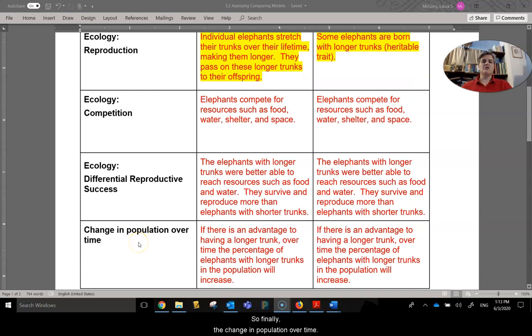So finally, the change in population over time. When there's an advantage of having a longer trunk, the percentage of the elephants who have longer trunks will increase in number in the percentage of the population. So having the longer trunk is advantageous. So they survive in order to produce more and more elephants with longer trunks. So that's the change in the population over time. An increased percentage of elephants with longer trunks. Again, no disagreement between Lamarck and Darwin here.